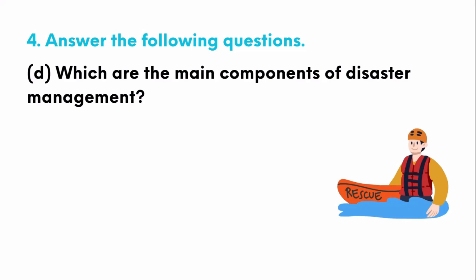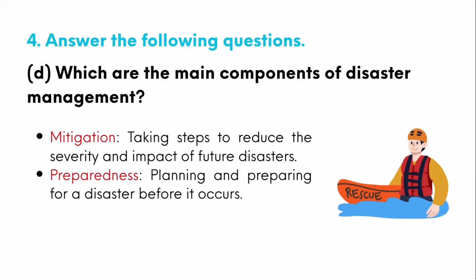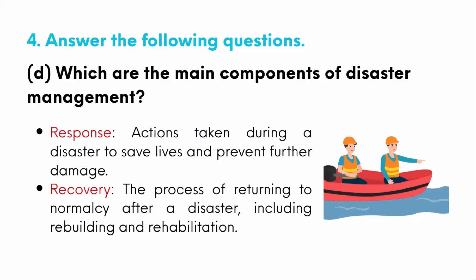The main components of disaster management are: mitigation — taking steps to reduce the severity and impact of future disasters; preparedness — planning and preparing for a disaster before it occurs; response — actions taken during a disaster to save lives and prevent further damage; and recovery — the process of returning to normalcy after a disaster, including rebuilding and rehabilitation.